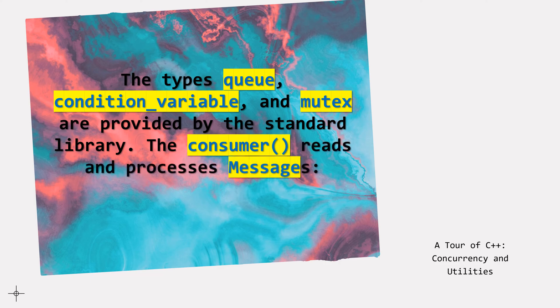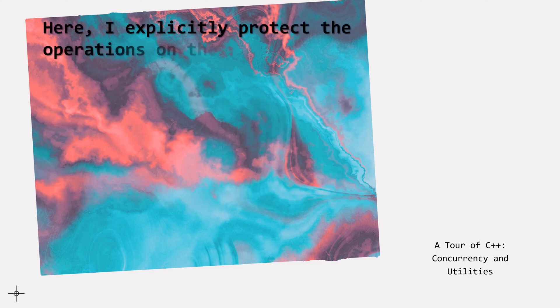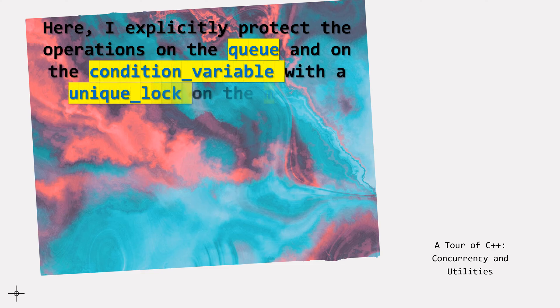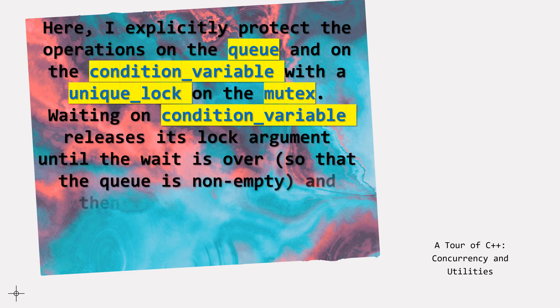The consumer reads and processes messages: void consumer() { while (true) { unique_lock<mutex> LCK(M_mutex); // acquire M_mutex while (M_COND.wait(LCK)) { /* do nothing */ } // release LCK and wait, reacquire LCK upon wake up. Auto M = MQ.front(); // get the message MQ.pop(); LCK.unlock(); // release LCK process(M); } } Here, I explicitly protect the operations on the queue and on the condition variable with a unique lock on the mutex. Waiting on a condition variable releases its lock argument until the wait is over, so that the queue is non-empty, and then reacquires it.